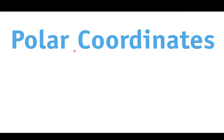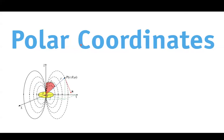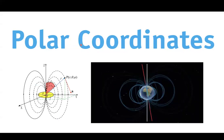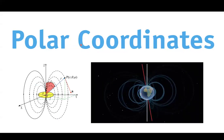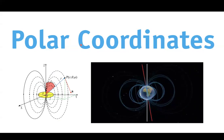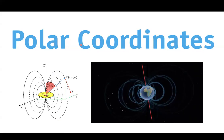Next up, polar coordinates. What's the use of polar coordinates? We can use polar coordinates to describe magnetic fields — this is one of the uses of them. They help us to calculate integrals easier, and they also help us to calculate the derivative and other calculus operations.